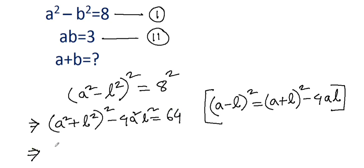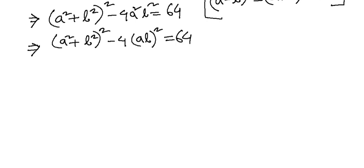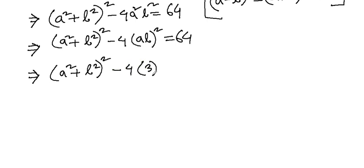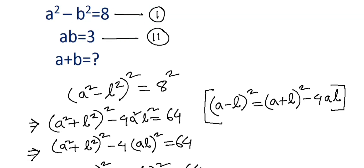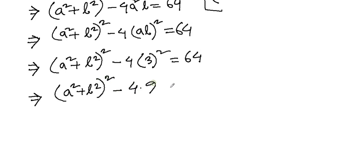Then we can write (a² + b²)² - 4(ab)² = 64. Now substituting ab = 3 — if you go above you'll find ab = 3 — so (ab)² means 3² = 9. We get (a² + b²)² - 4 × 9 = 64.